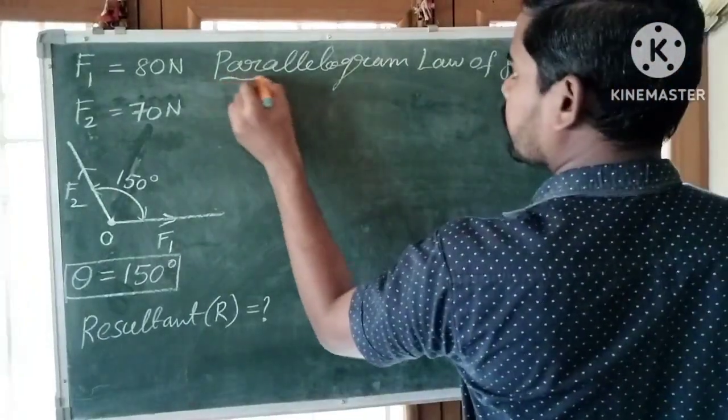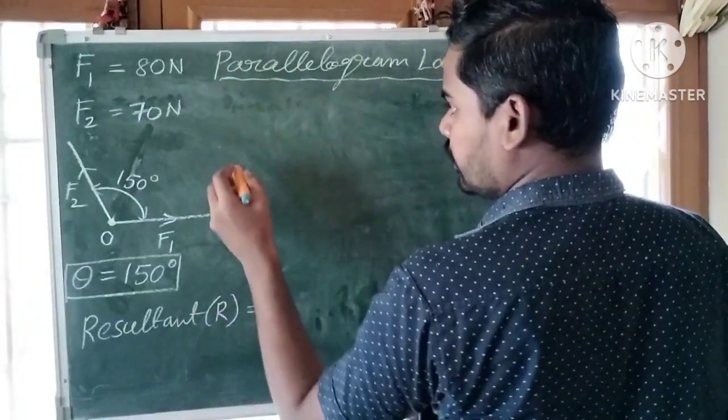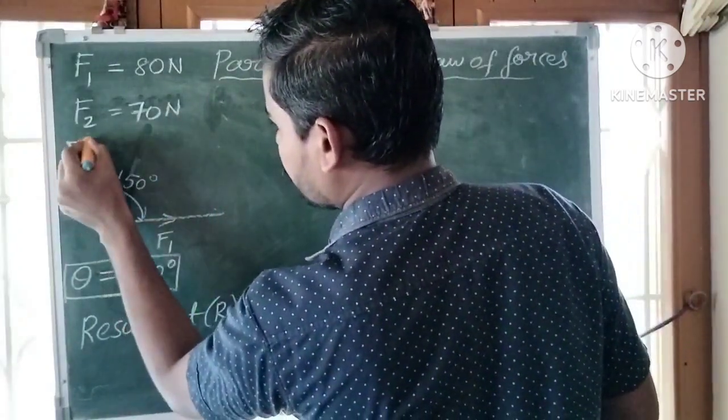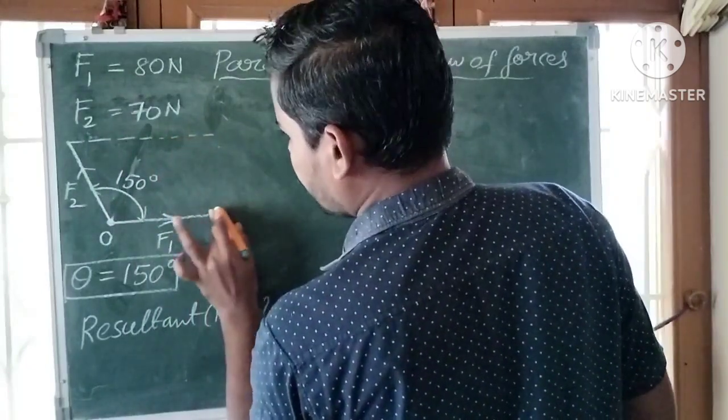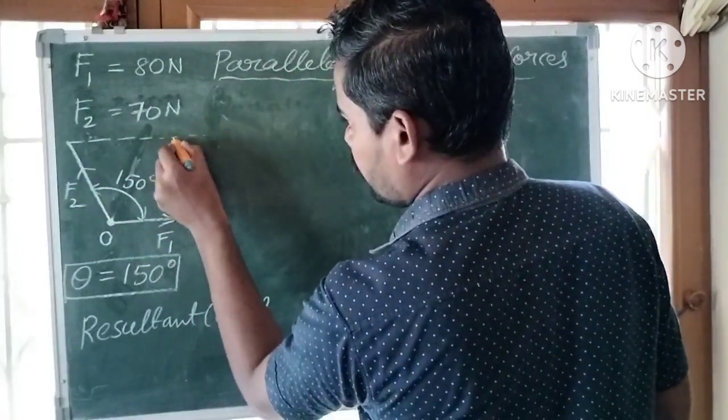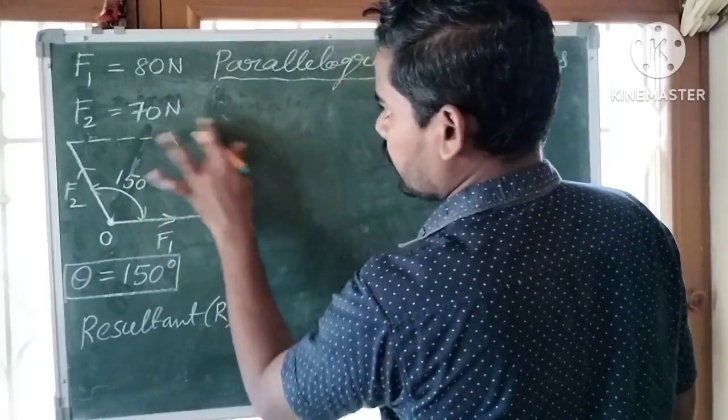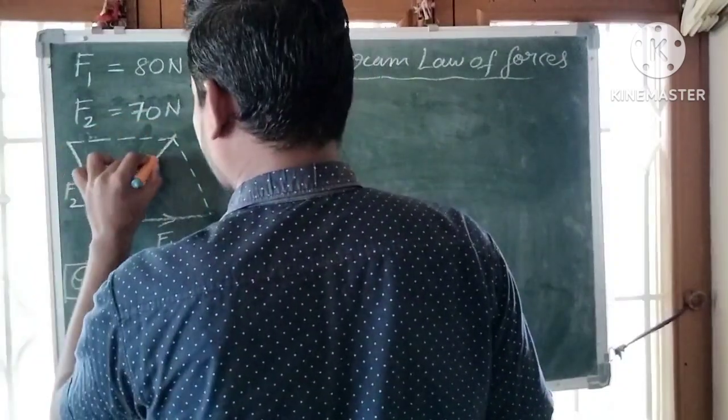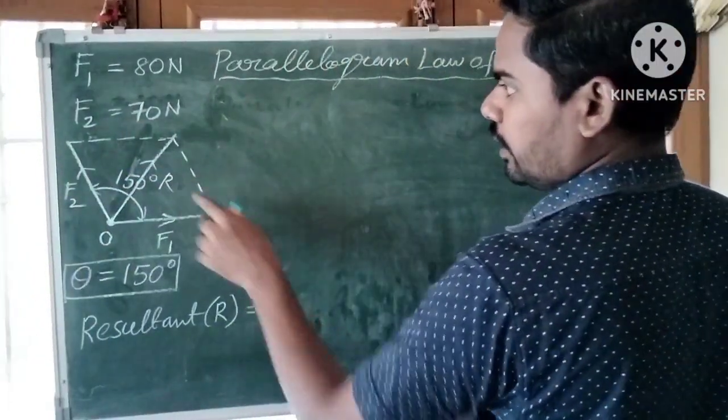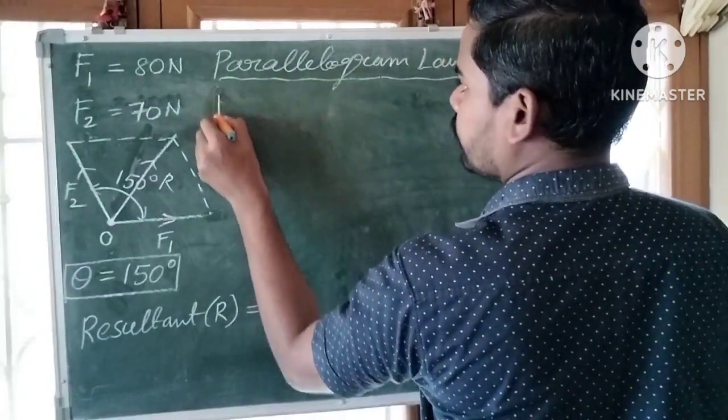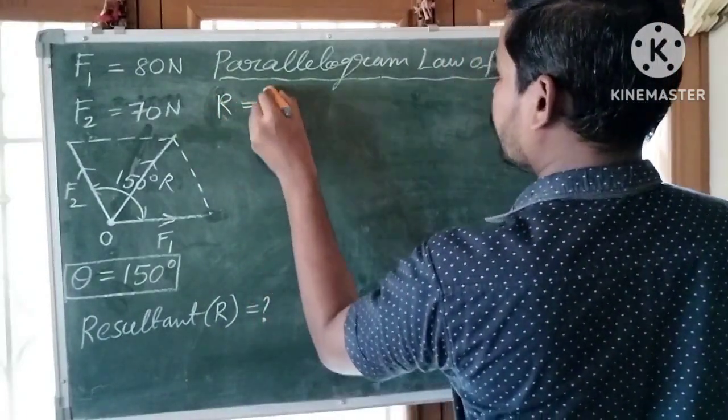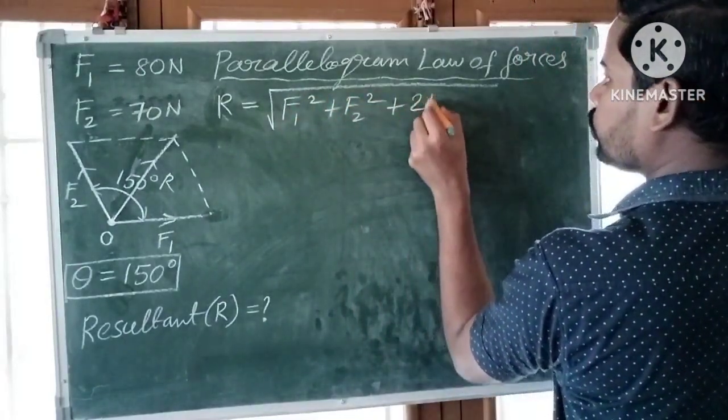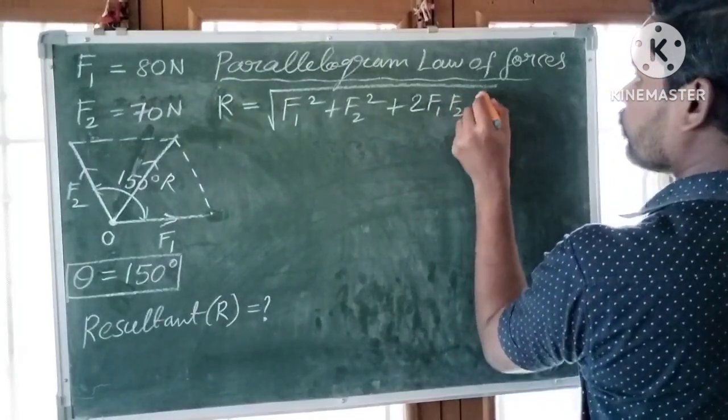By using this concept, we can find resultant force. Using this data, we can construct a parallelogram. According to parallelogram law of forces, resultant R is equal to root over F1 square plus F2 square plus 2F1 F2 cos theta.